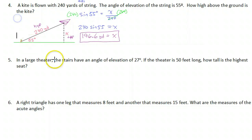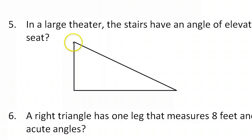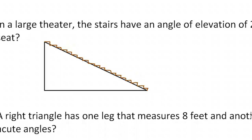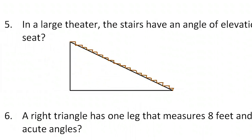I'm going to draw a triangle to represent the stairs in this theater. The stairs are like here in this picture. They say the angle of elevation is 27 degrees — that's the angle with the ground, so it's 27 degrees.